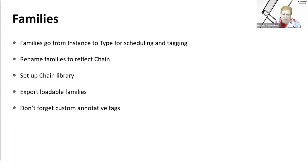You can batch rename families in a directory using Dynamo — add a prefix or suffix to them. You can also run Dynamo to rename them on the project side. Just be aware: if you renamed it in your directory, rename it the same thing in your project and load it on top. Be consistent — you don't want old and new named families coexisting. Clean it up so you have specifically the chain-named families in there.